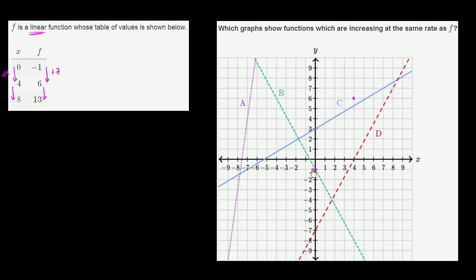We know that these two points are on f, and so we get a sense of the rate of change of f. And when you draw it like that, it immediately becomes pretty clear which of these has the same rate of change as f.